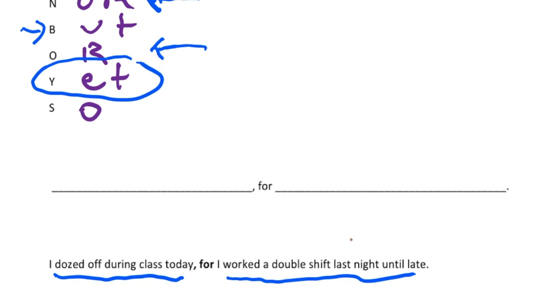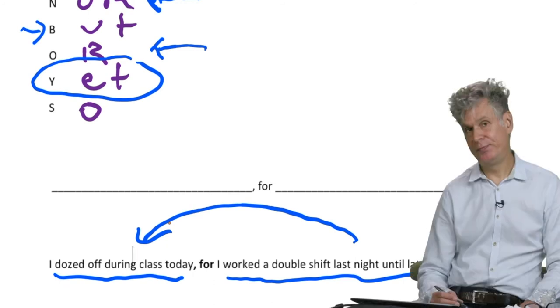So I worked a double shift last night and that is why the thing at the beginning of the sentence happens. So it's a causal relationship. You state the thing that happened and then you talk about the cause after.